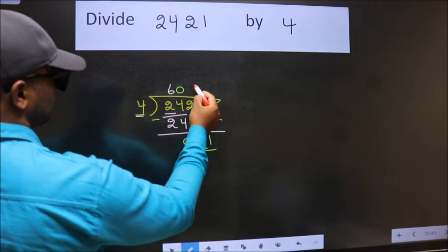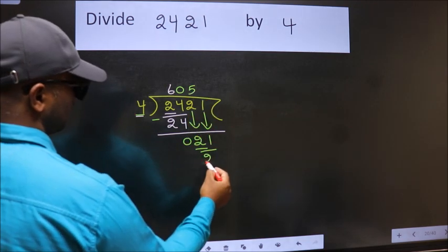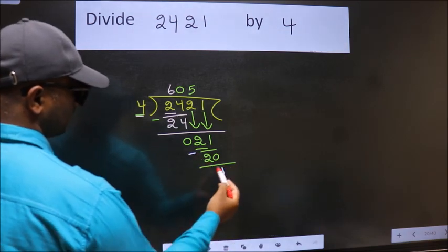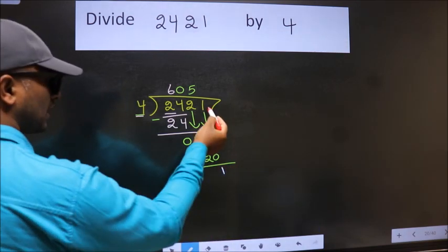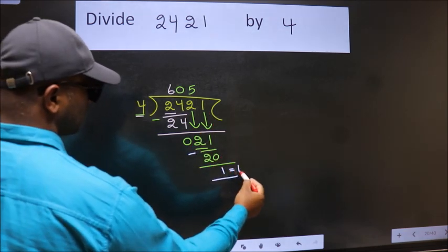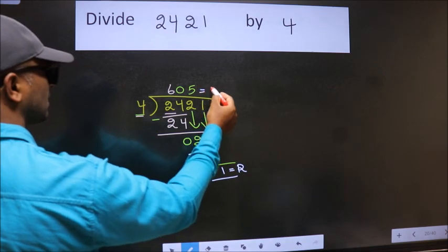Now we subtract. We get 1. No more numbers to bring down, so we stop here. This is our remainder, and this is our quotient.